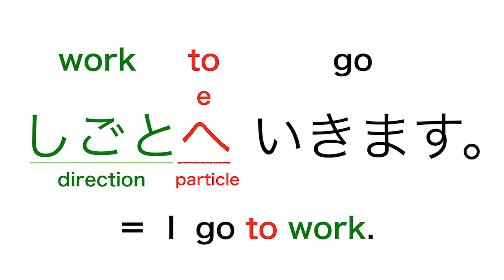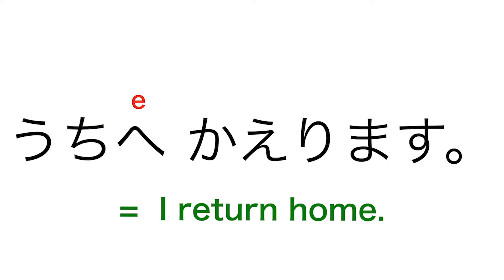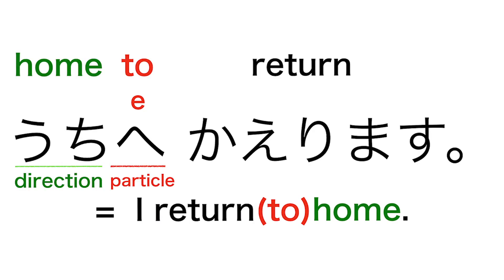'Ikimasu' means 'go.' Another example: 'uchi e kaerimasu' means 'I return home.' The direction particle comes after 'uchi,' which means 'home,' and 'kaerimasu' means 'return.'